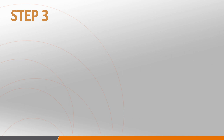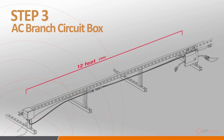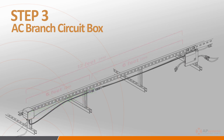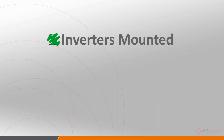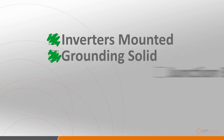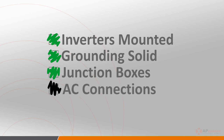Step 3 involves installing the AC branch circuit junction box in a suitable location, as close to the end of a branch of modules as possible. You'll have approximately 12 feet of AC cable to work with: 6 feet of cable associated with the last inverter in the branch, and 6 feet of AC connector cable, sometimes called a whip. Make sure to wire the conductors: L1 is red, L2 is black, and neutral is white. With the inverters mounted on the racking system, the grounding all sorted out, and junction boxes installed in the appropriate locations, it's time to connect the microinverters together on the AC side.